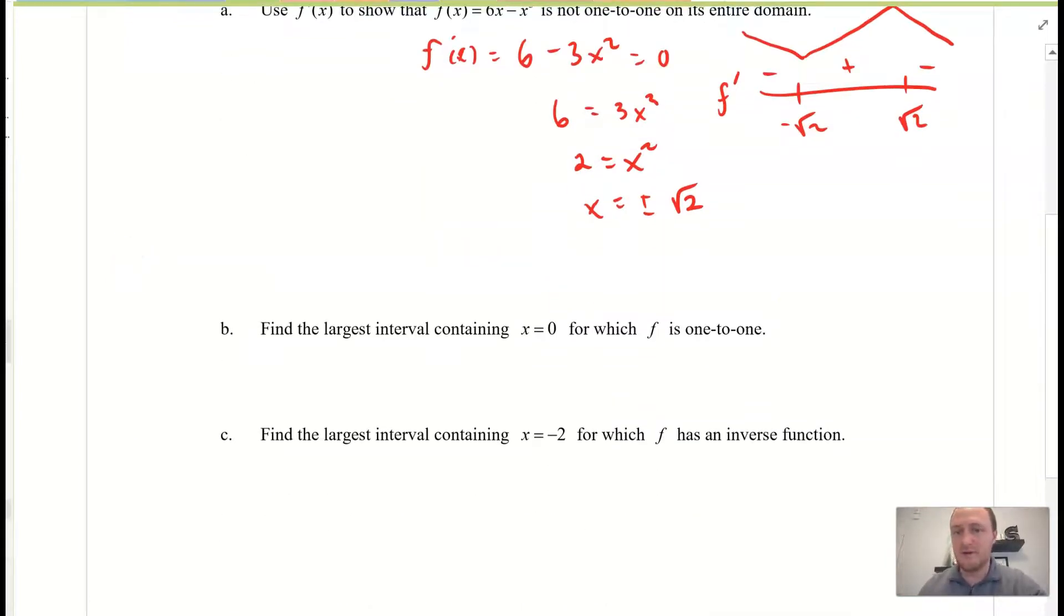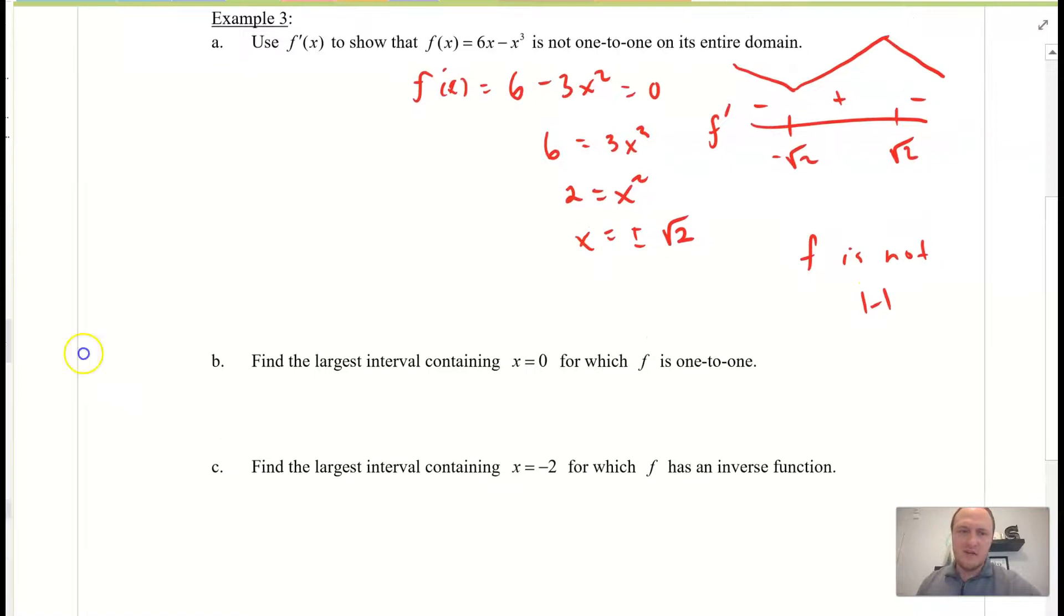therefore, since our function is increasing, decreasing, or sorry, decreasing, increasing, and then decreasing, we know that f is not 1 to 1. Not 1 to 1. All right.